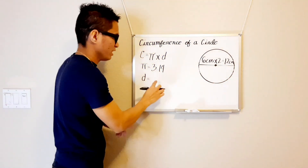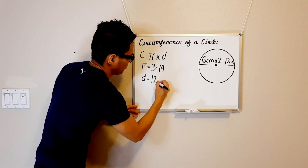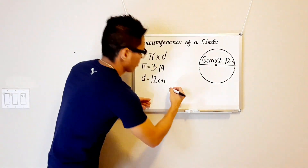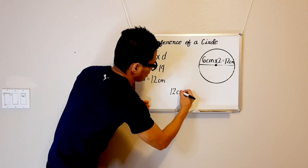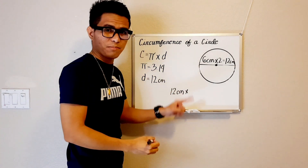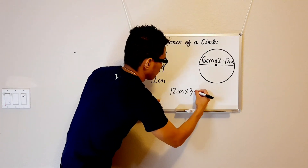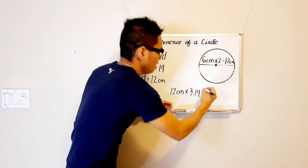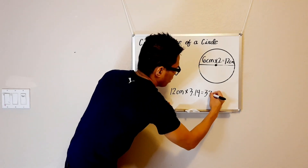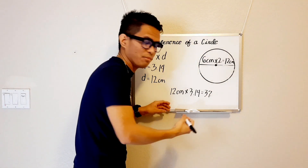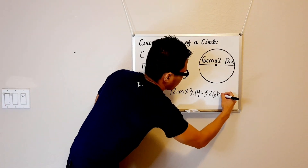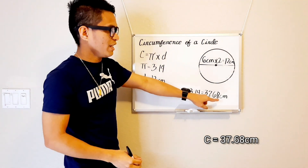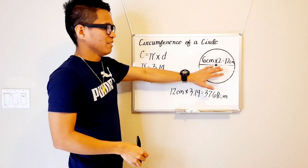So our diameter is 12 cm. So I'm gonna put 12 cm in here. And we're gonna multiply our diameter by our pi, which is 12 cm times 3.14. 37.68 centimeters is the circumference of this circle.